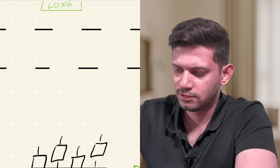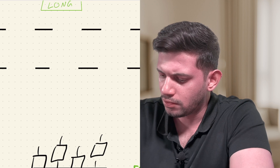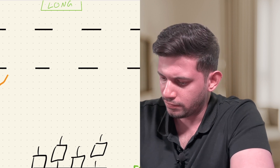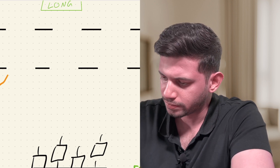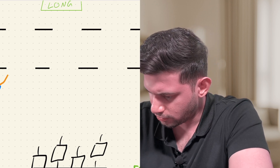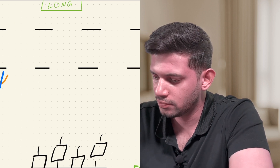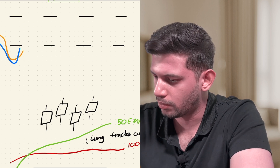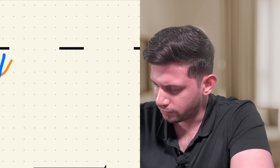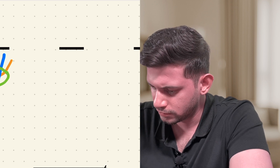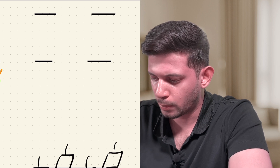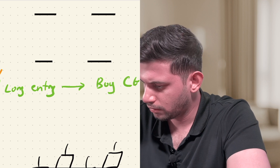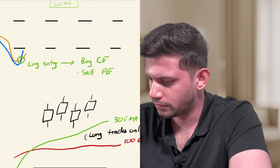With condition one met, we look at the stochastic indicator, which has two lines — an orange line and a blue line. For a long trade, we want both lines to be below the 20 level. When the blue line crosses above the orange line while both are below 20, the long entry condition is triggered. So to summarize: condition one is the 50 EMA above the 100 EMA, and condition two is the blue line crossing above the orange line below the 20 range. When both are true, we take a long entry.